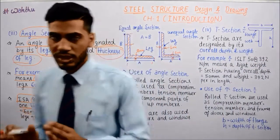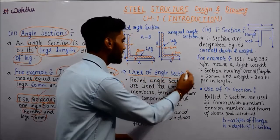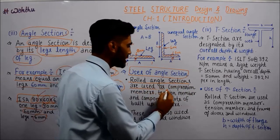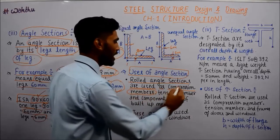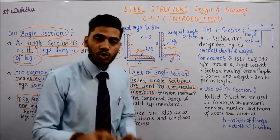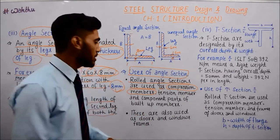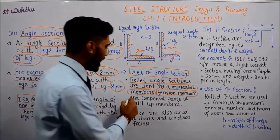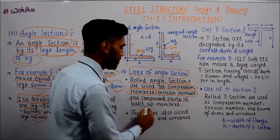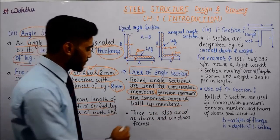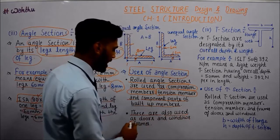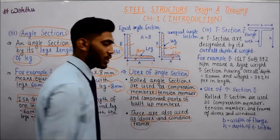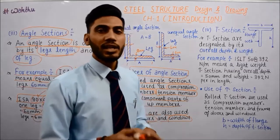Use of angle section: rolled angle sections are used as compression members, tension members, and as component parts of built-up members. These are also used as door and window frames, and angles provide support in pre-fabricated structures.